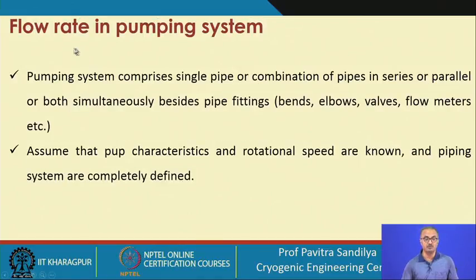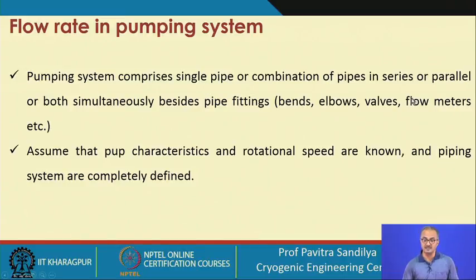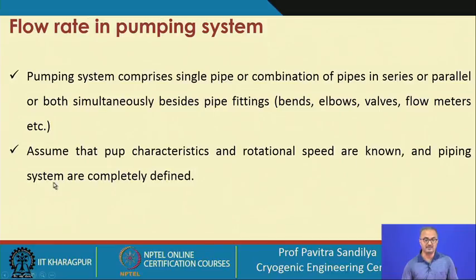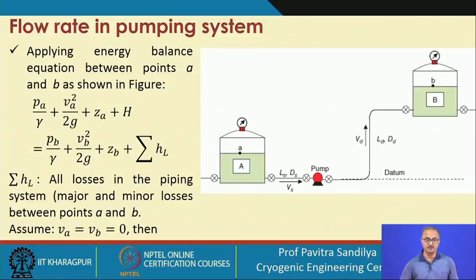Now we come to the flow rate in a pumping system. A pumping system comprises a single pipe or a combination of pipes laid in series, parallel, or both, along with various joints and fittings such as bends, elbows, valves, and flow meters. We assume that the pump characteristics and rotational speed are known and the piping system is completely defined — with all these things defined we can find out the flow rate in the pumping system.